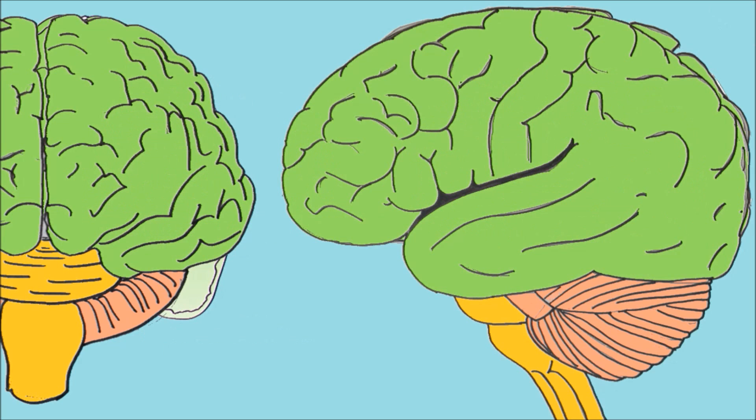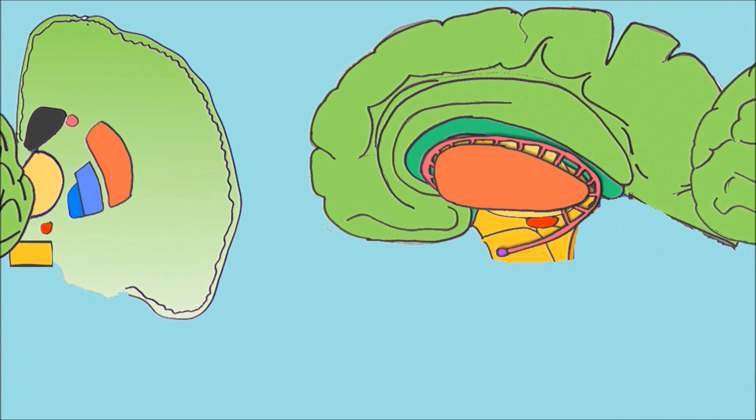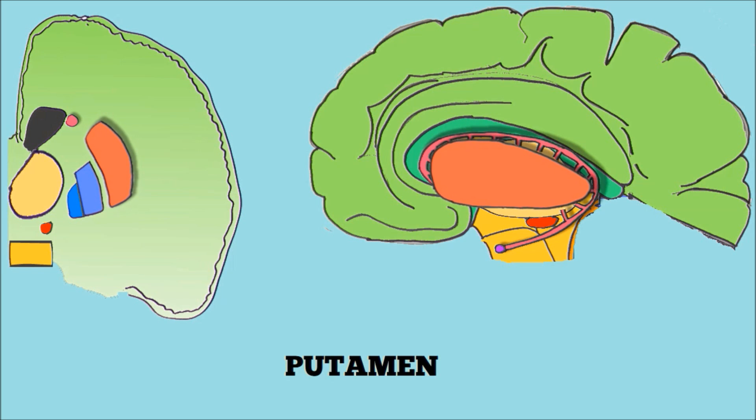Let's make this a bit bigger and remove the cortex. Immediately we can see a number of structures here, but first of all let's focus on the putamen. The putamen helps to regulate movement and is involved in reinforcement and implicit learning.